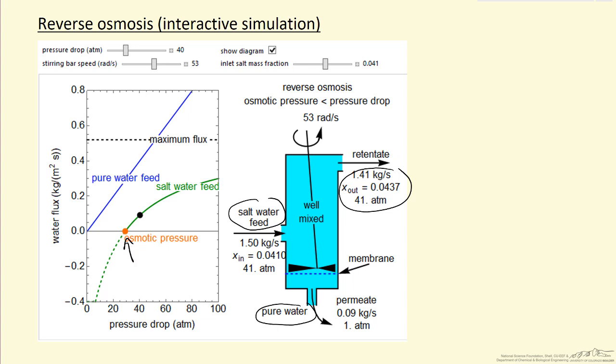We can use the sliders to adjust parameters. If I change the pressure drop, I'm moving this black dot to a different location, so we can see what the flux would be for that pressure drop.